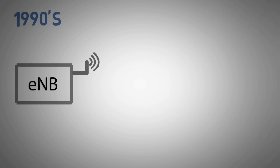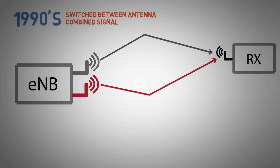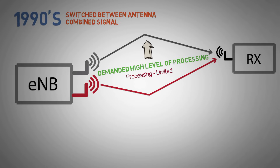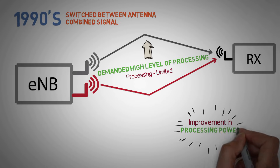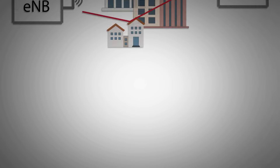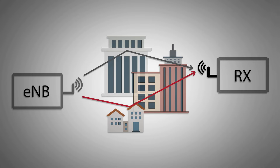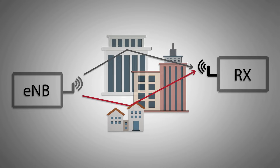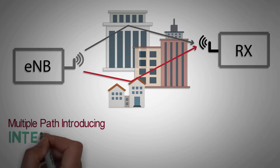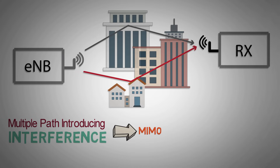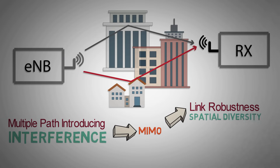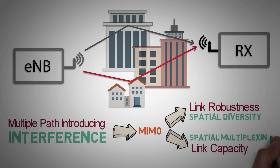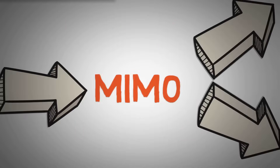Up until the 1990s, space diversity was used in systems that switched between two antennas, or combined the signals to provide the best signal. Such systems demanded a high level of processing, but system processing was limited. However, with the improvement of processing power, it was possible to implement MIMO. Between a transmitter and a receiver, the signal can take many paths due to obstacles and objects in the medium. Traditionally, these multiple paths only introduced interference. With the introduction of MIMO, these additional paths can be used to provide additional robustness to the radio link by spatial diversity, or to increase the link data capacity by spatial multiplexing. So let us understand how both of them work in MIMO.